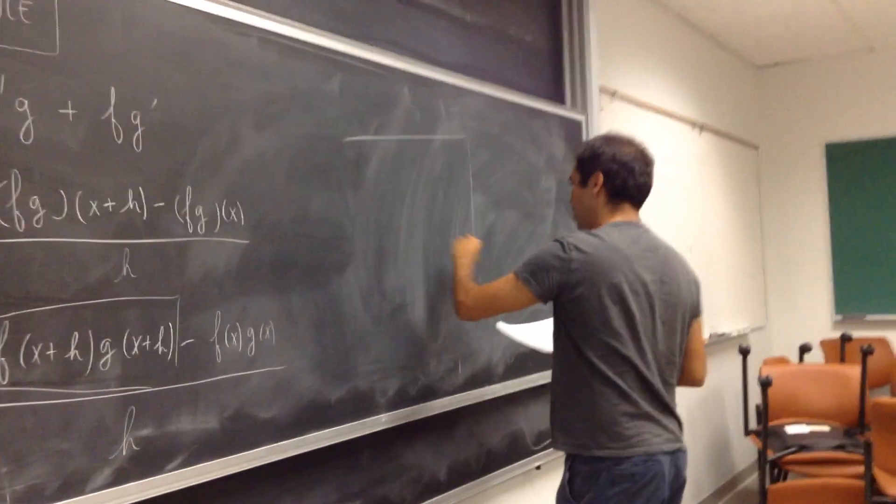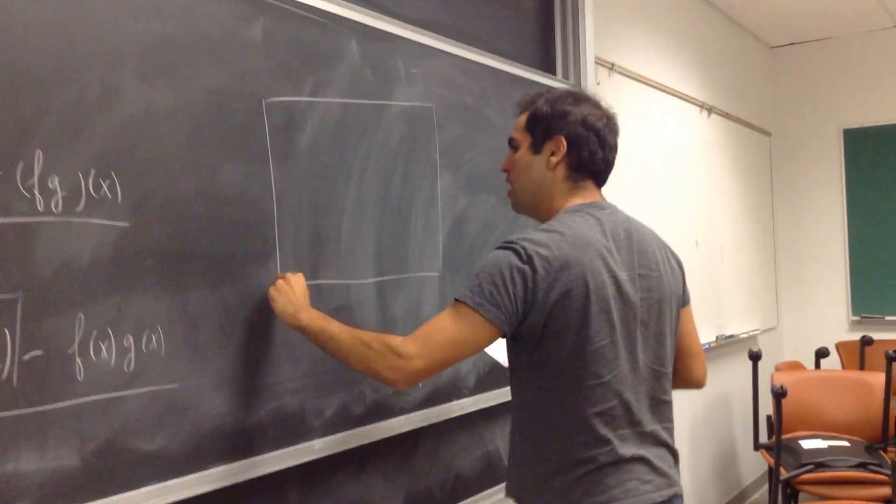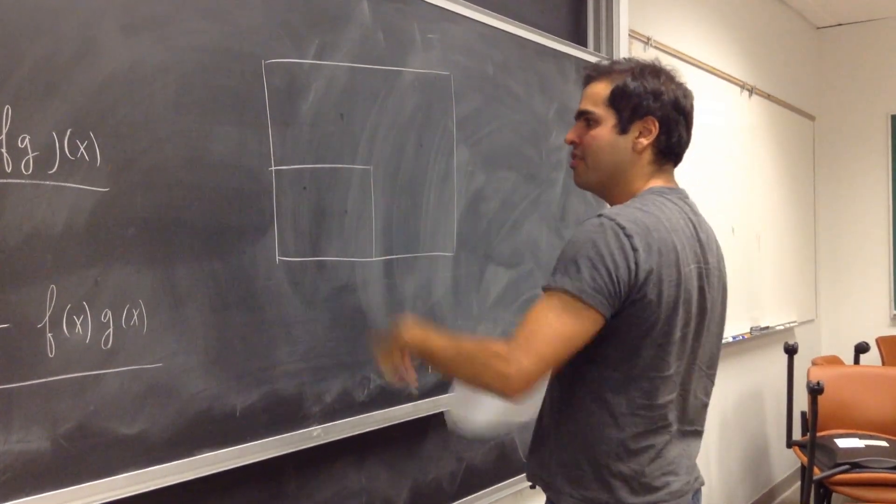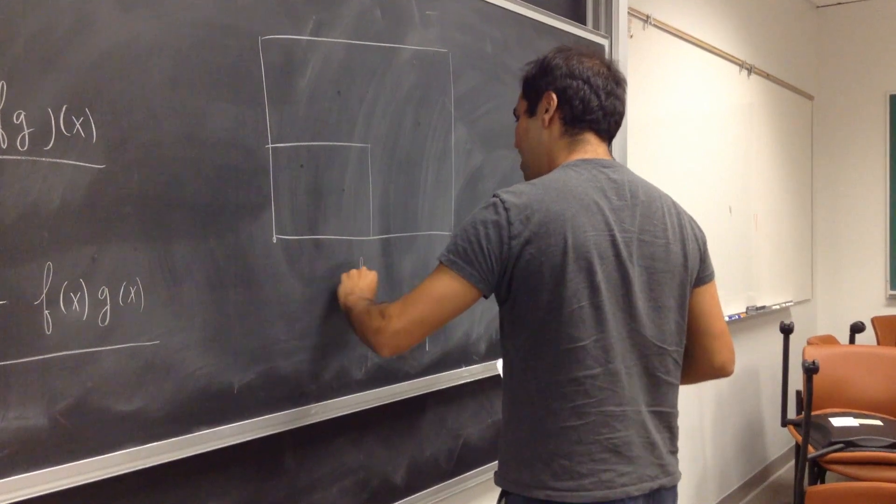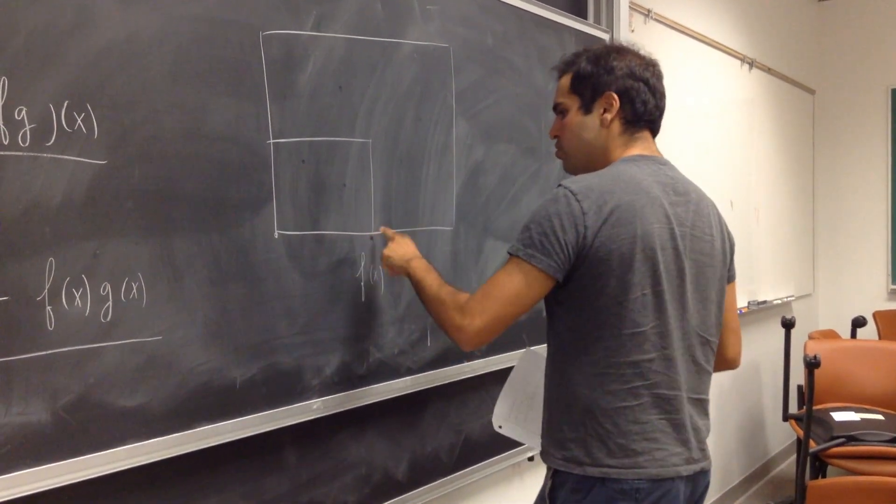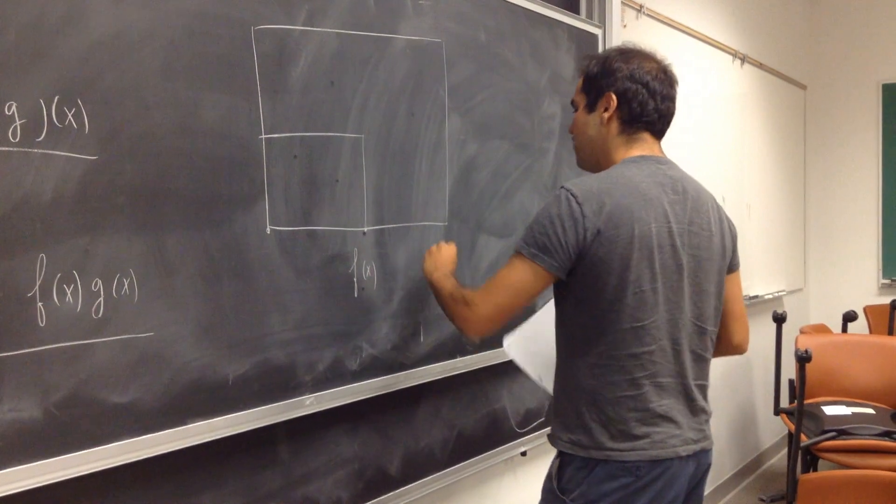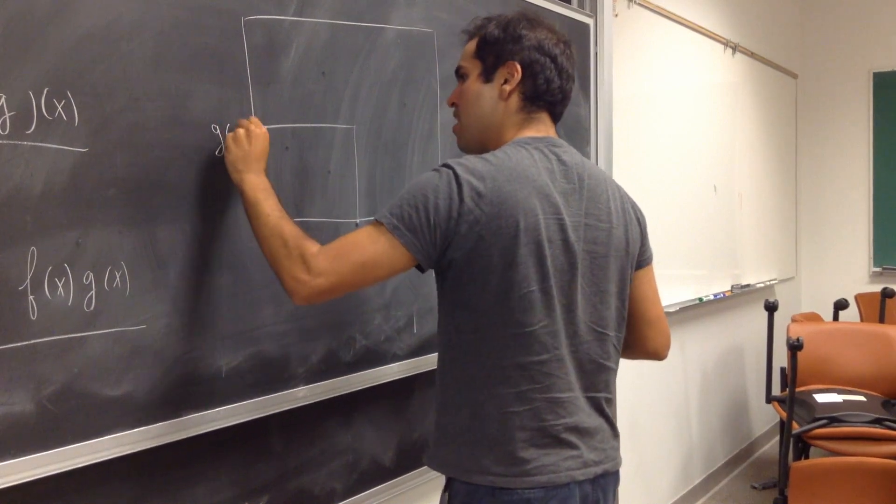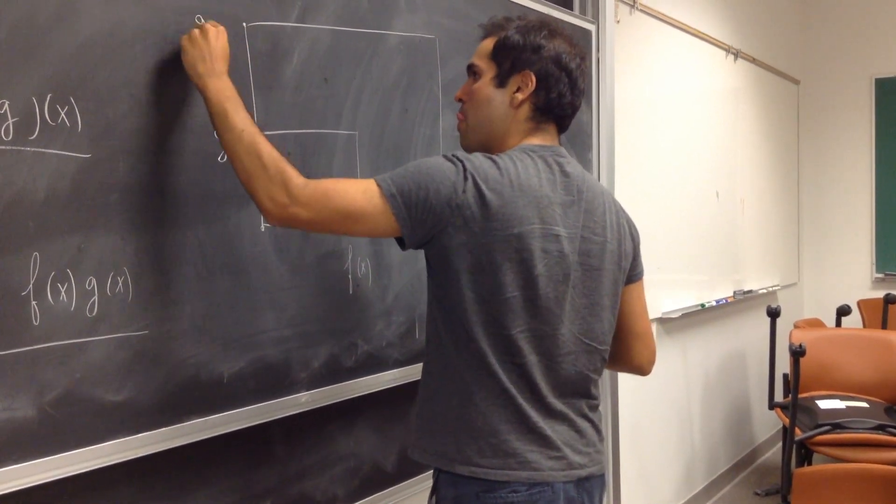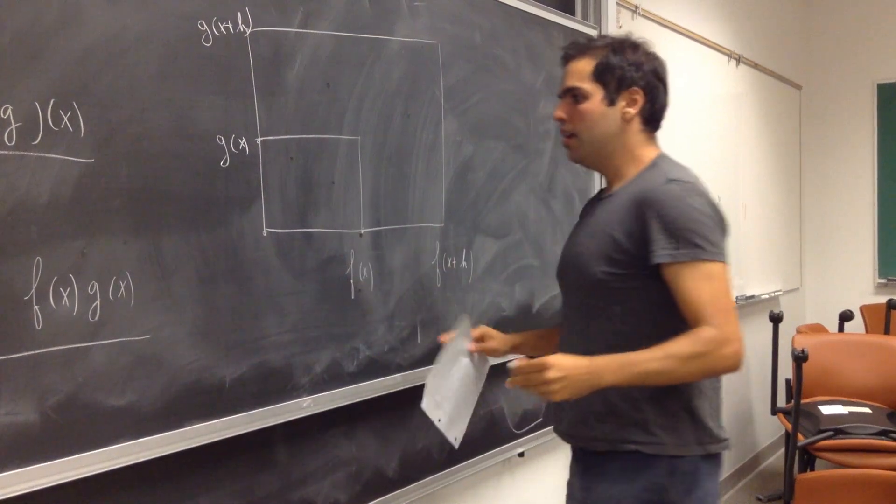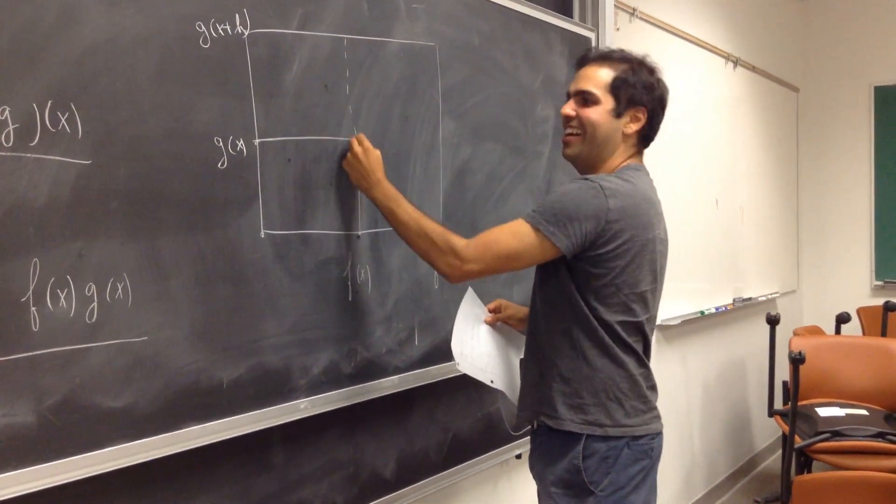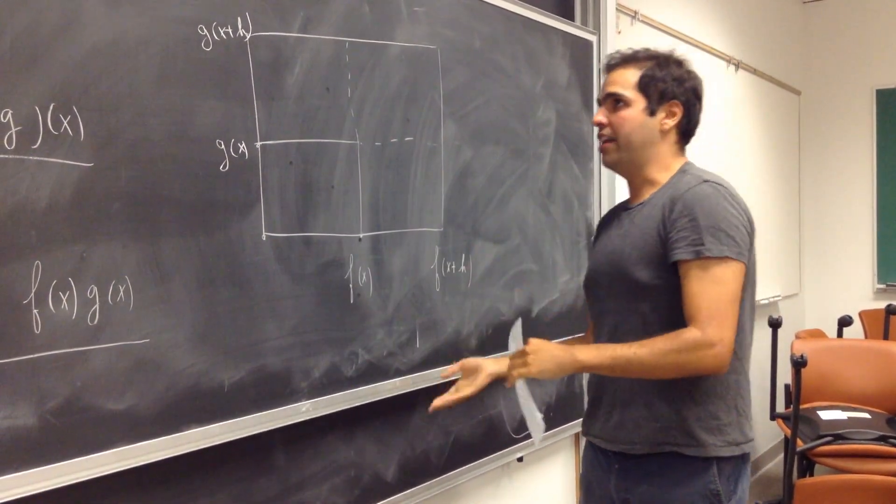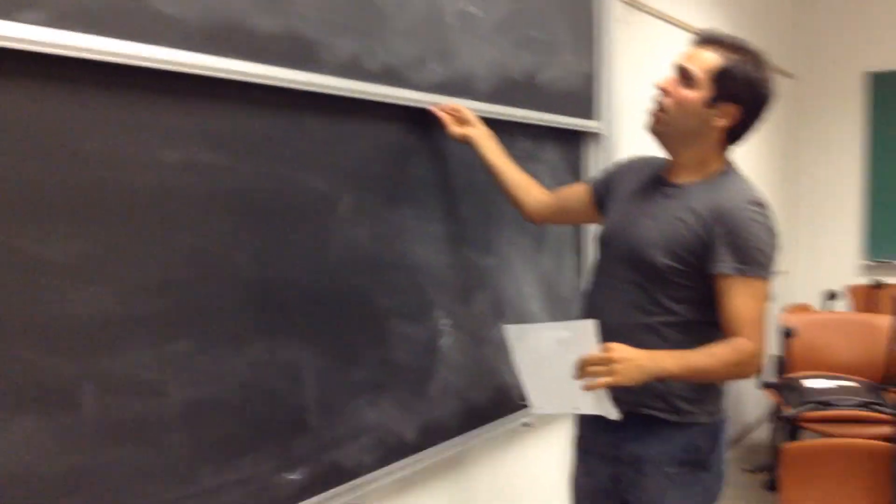So imagine you have this rectangle where you have a smaller rectangle inscribed in a bigger rectangle, like those Russian dolls, and the vertices are f of x, f of x plus h, g of x, g of x plus h. And with this rectangle, let's compare the area of the rectangles.